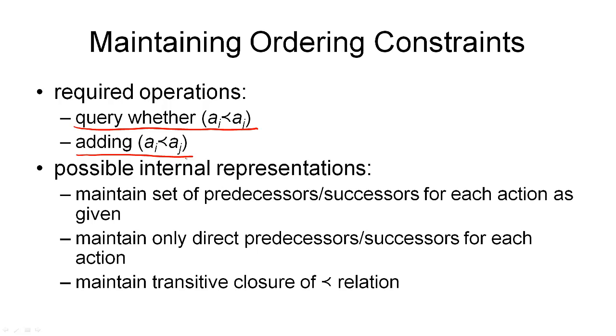And then of course, at some stage, we want to add new orderings to our constraint network. So we want to assert that an action a_i must come before an action a_j. And let us assume that we don't have to do consistency checking when we add an ordering constraint to our constraint network.